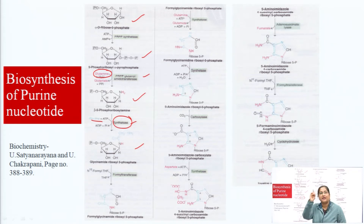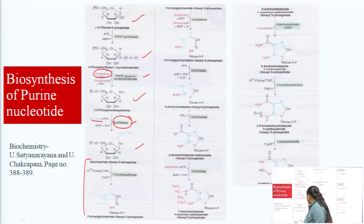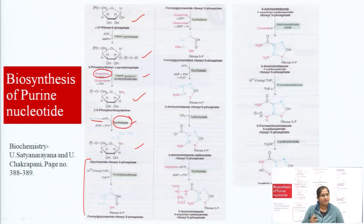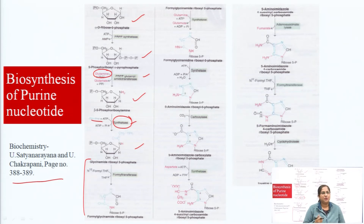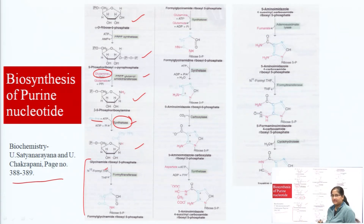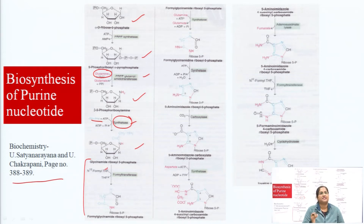Glycinamide ribosyl-5-phosphate is then converted into formylglycinamide ribosyl-5-phosphate, where we are incorporating N10-formyl-THF. From this step — which is the 4th step — to the 10th step, these are very important steps because there is incorporation of THF. There are already 11 to 12 steps for the synthesis of our purine nucleotide, and steps 4 through 10 are particularly important.